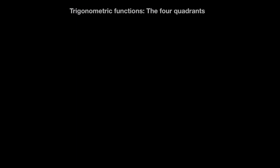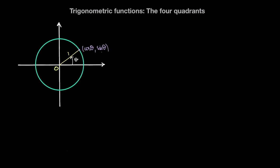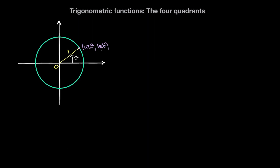In this video we're going to talk about trigonometric functions and the certain values they take for a given value of theta. What we have over here is a unit circle. The x-coordinate of any point on the unit circle is cosine of theta, and the y-coordinate is sine of theta, in terms of the angle theta subtended from the positive x-axis.